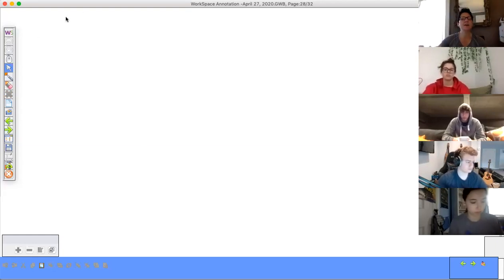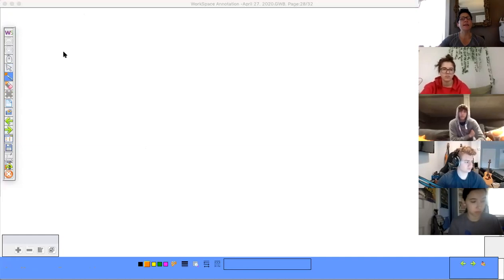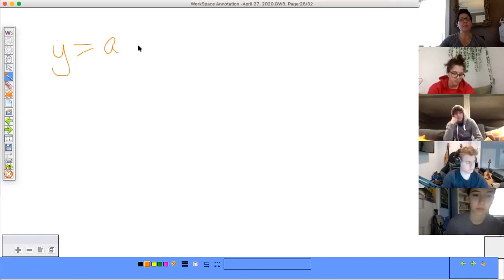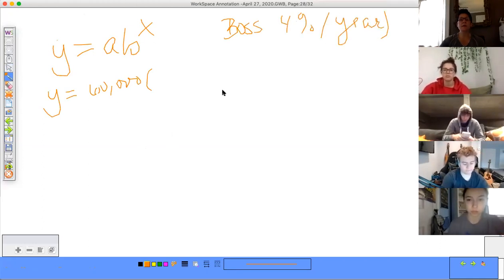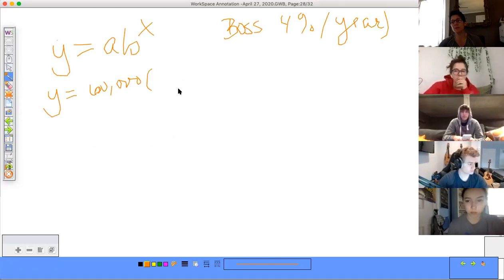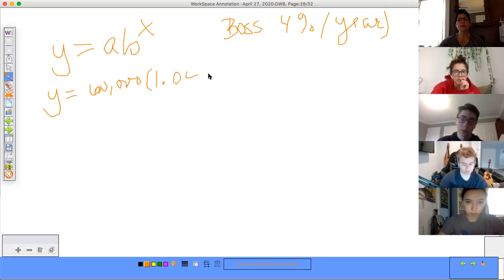Yeah, we did about how it's compound when it's better to start off low because it's initially lower, but then it gets higher compared to the other one. Right. So if we had something like y equals ab to the x power, and if we were to do a salary, remember we did a salary, like your starting salary is like $60,000, right? $60,000. And your boss wants to give you a 4% raise per year.